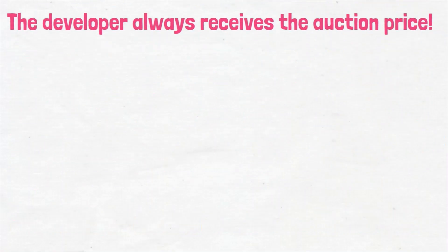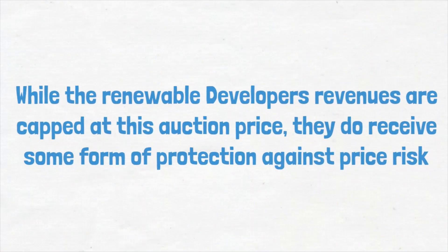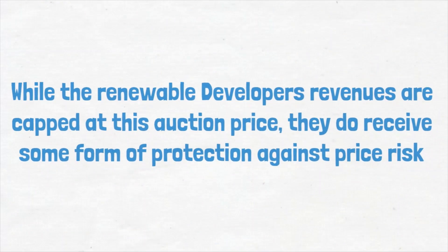While the renewable developers' revenues are capped at this auction price, they do receive some form of protection against price risk. If the wholesale price drops significantly, they will still receive their auction price, as the difference between the two prices will be made up by the government.